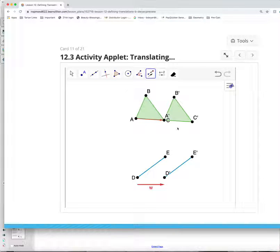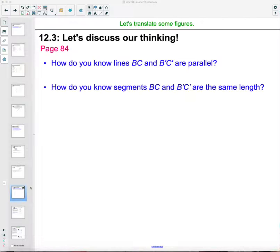Alright then, how do we know that they're parallel? So how do we know that these two lines are parallel? Again because our translations move the shape parallel to its image and the original figure to its pre-image. How do we know they have the same length? Because it's a rigid transformation.